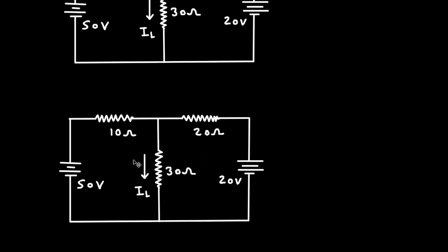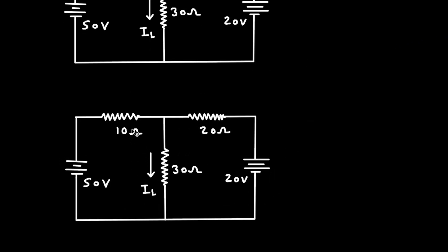Currently this 10 ohm is in series with this 50 volt source. So to convert it to a current source, we have to connect this 10 ohm resistance in parallel. So let's connect this 10 ohm resistance in parallel.